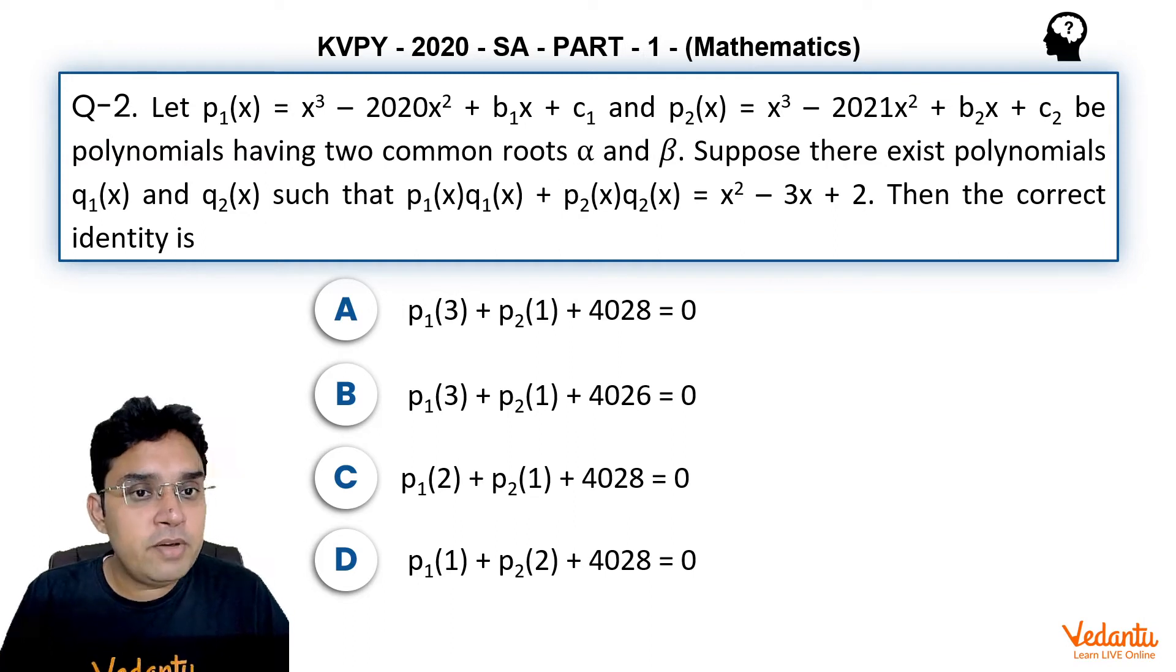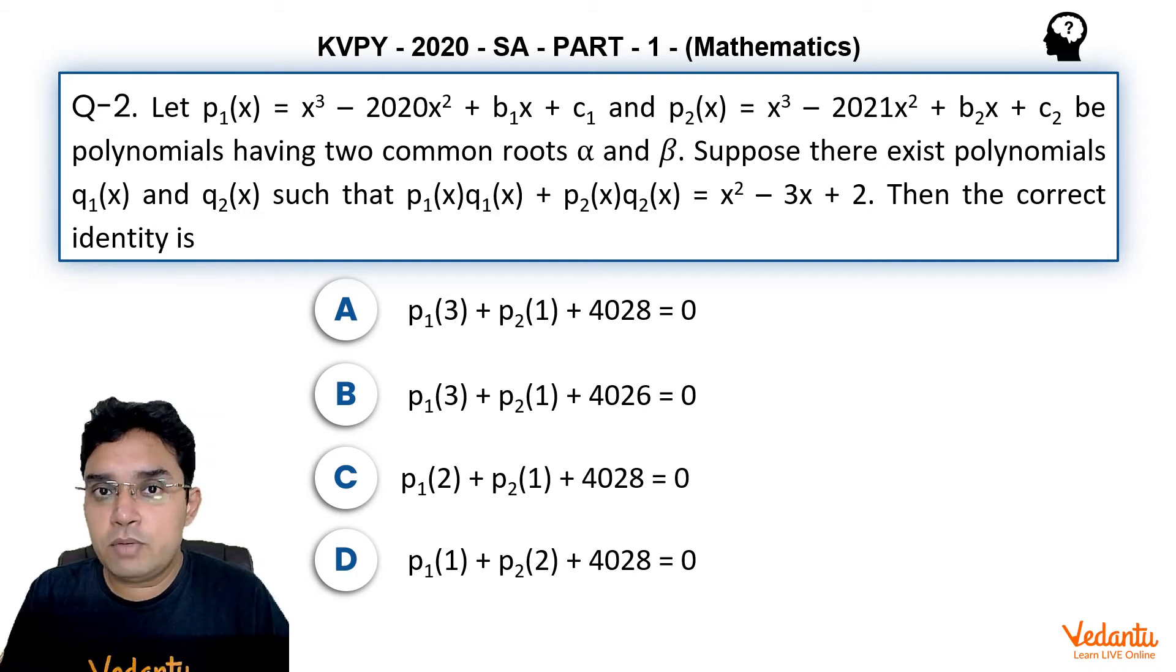It says let p₁(x) = x³ - 2020x² + b₁x + c₁ and p₂(x) = x³ - 2021x² + b₂x + c₂ be polynomials having two common roots α and β. Suppose there exist polynomials q₁(x) and q₂(x) such that p₁(x)q₁(x) + p₂(x)q₂(x) = x² - 3x + 2.